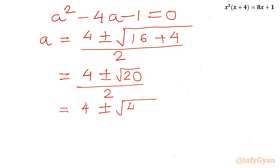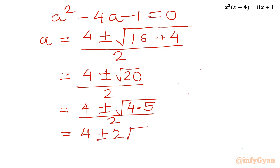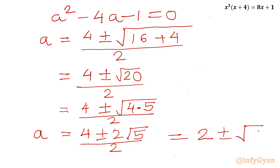This will be 4 times 5 divided by 2. I can write 4 plus or minus 2 square root 5, divided by 2. So we can conclude A equals 2 plus or minus square root 5. This is our value of A.